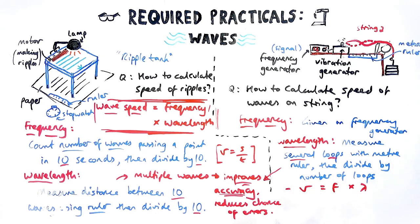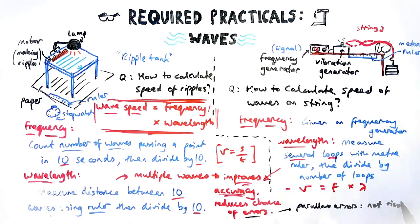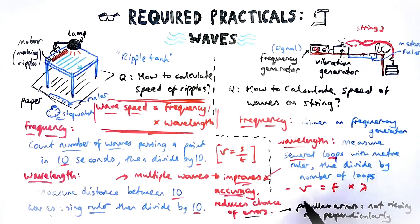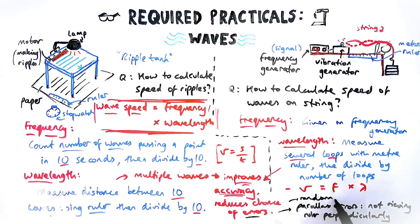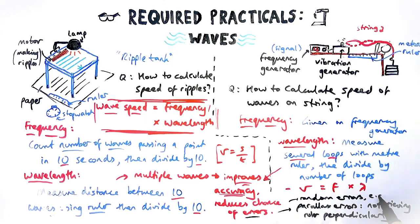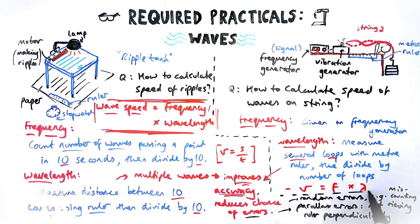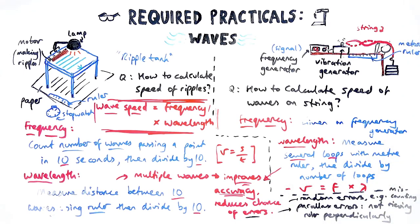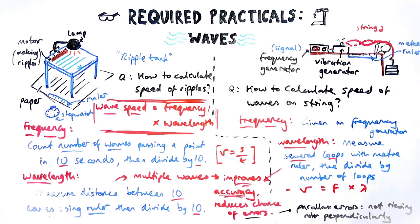Another way to reduce the chance of errors is how you measure the wavelength. Quite a common thing in physics when you're measuring something with a ruler, like the wavelength, is to avoid parallax errors. Parallax error means not viewing something side-on or perpendicular to or in line with. So viewing it a bit higher, a bit lower means the reading is different to what it should be, which would be an example of a random error. You could also miscount the number of loops as well, which would be an issue with this practical.